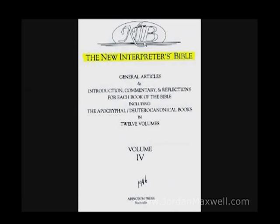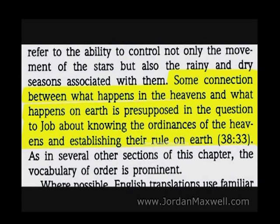The New Interpreter's Bible, under Job 38, says, 'Some connection between what happens in the heavens and what happens on earth is presupposed in the question to Job about knowing the ordinances of the heavens and establishing their rule on the earth.' So if you read what God asks Job in Job 38:33, it's clear that the astrological symbols in the heavens are part of the ordinances of the heavens that establish their rule on the earth.